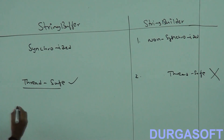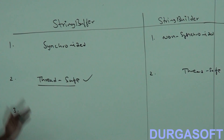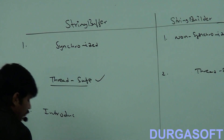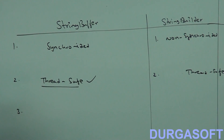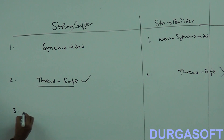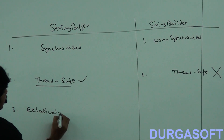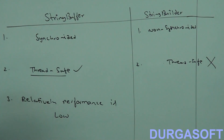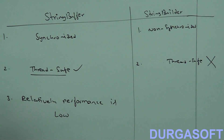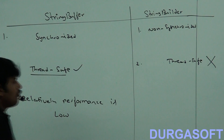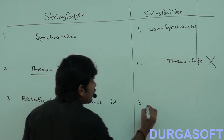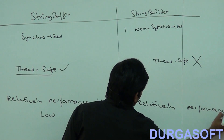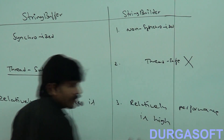Third point is performance. Relatively, StringBuffer performance is low because threads have to wait, and hence performance is going to be down. But in StringBuilder, threads are not required to wait. That's why relatively, the performance of StringBuilder is high.